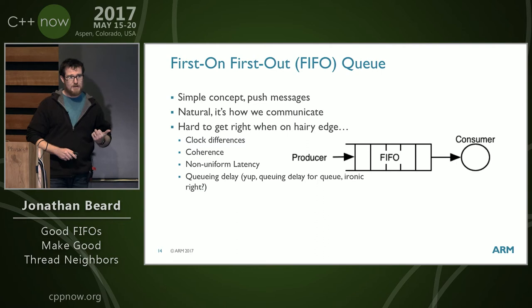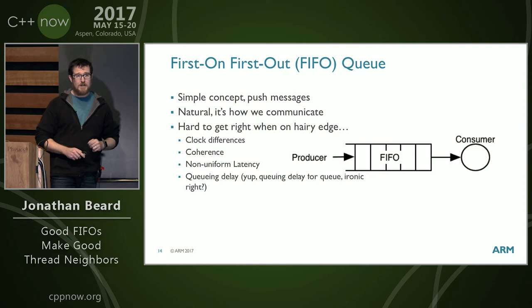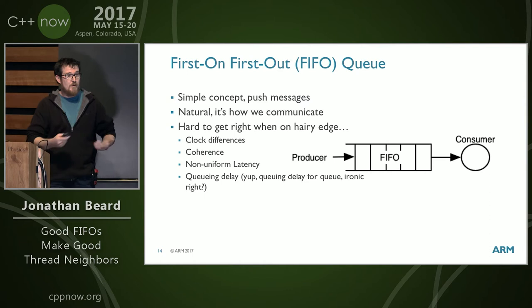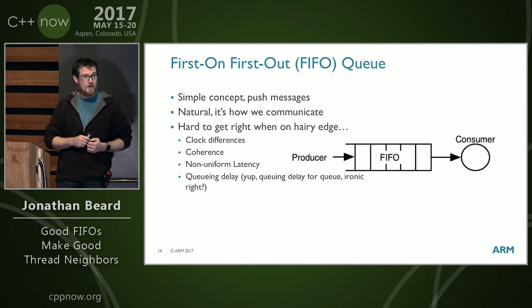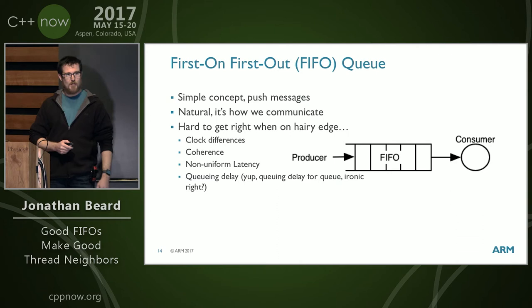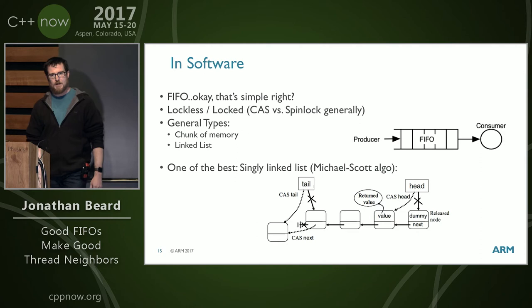Here's a quick list of challenges: clock differences, coherence (which we'll talk about a lot), non-uniform latencies — a huge problem — and queuing delay. Not just because of our software queues: we have queuing delay in the hardware itself. Sitting on top of the FIFO you've built, you now have extra queues in your load-store unit, in your coherence network, and in the memory system. There are queues everywhere for various purposes.